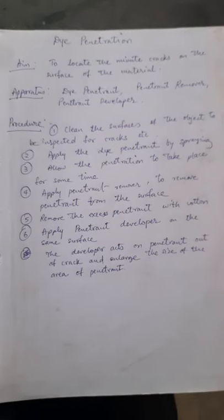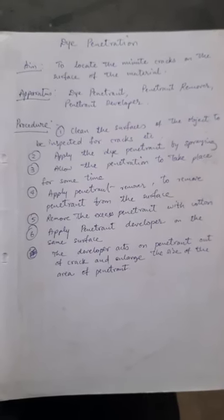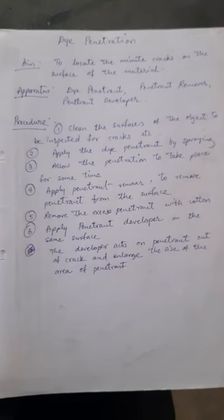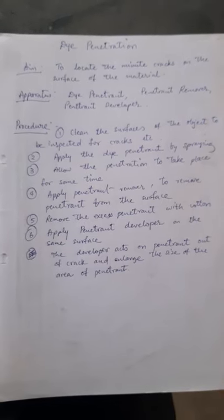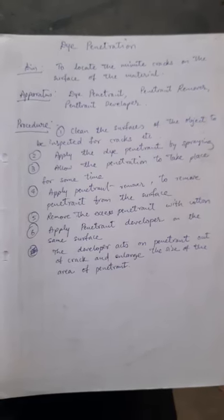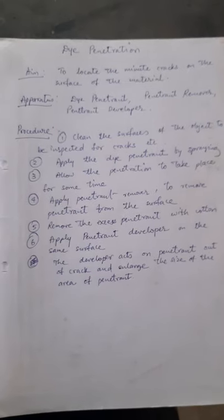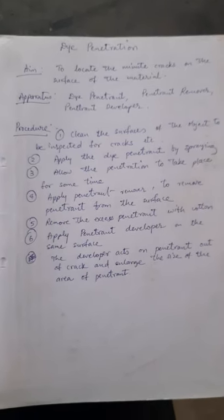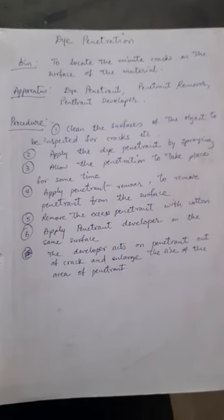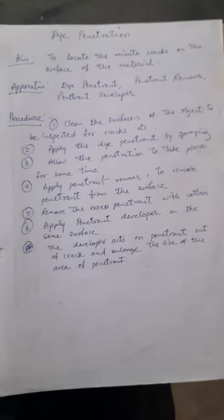Material Testing Lab. Experiment number 1: Dye Penetration. Aim: to locate the minor cracks on the surface of the material. Dye Penetration is a non-destructive test used to locate minor cracks on the surface of the material.